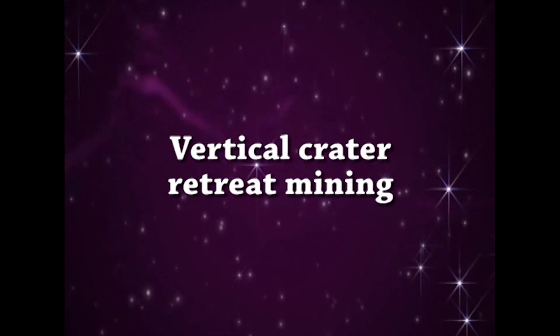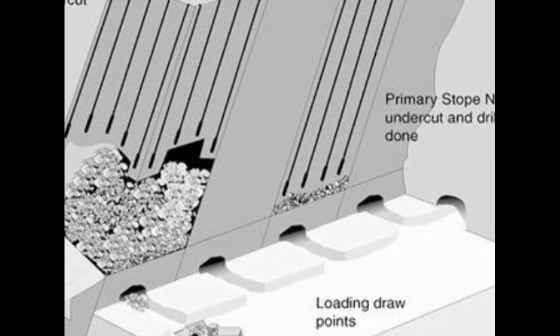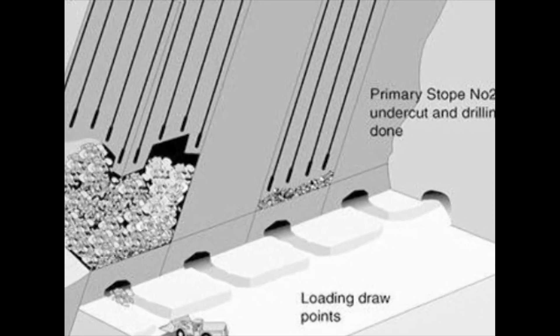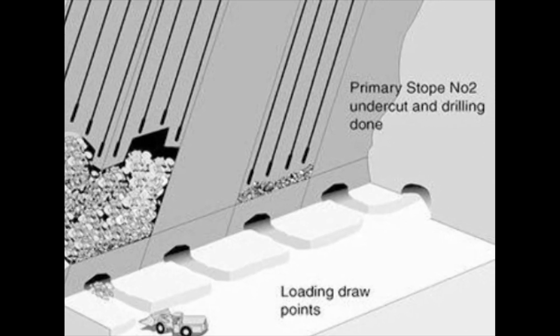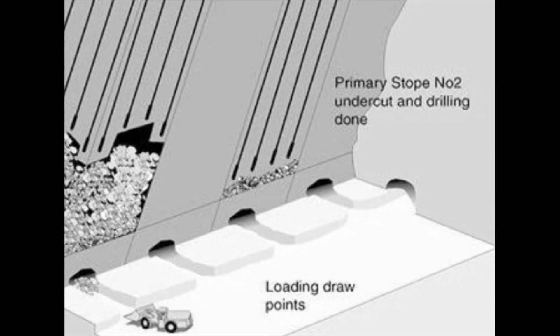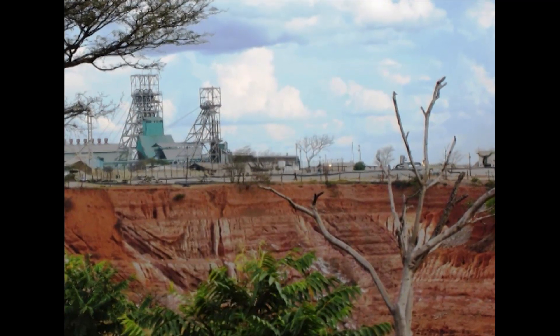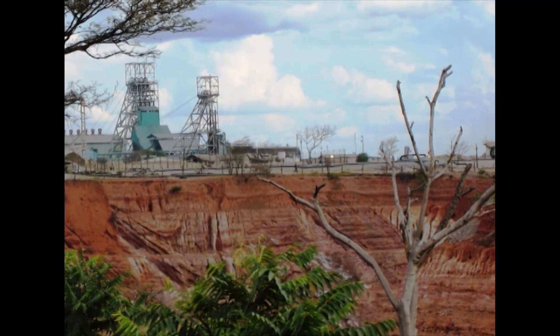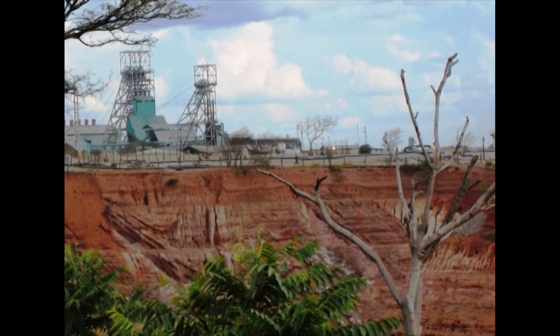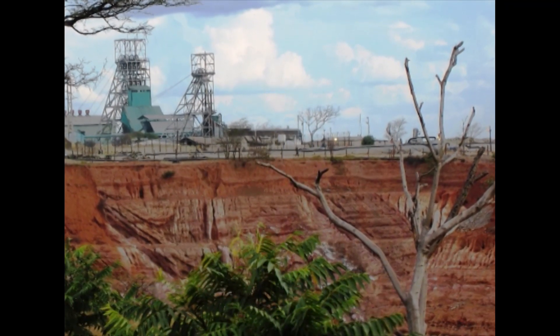Vertical crater retreat (VCR) mining is applicable to mineralization in steeply dipping strata. It uses a different blasting technique, breaking the rock with heavy concentrated charges placed in holes — craters — with very large diameter, about 165 millimeters, to about 3 meters away from a free rock surface. Blasting breaks a cone-shaped opening in the rock mass around the hole and allows the blasted material to remain in the stope during the production phase, so that rock fill can assist in supporting the stope walls.